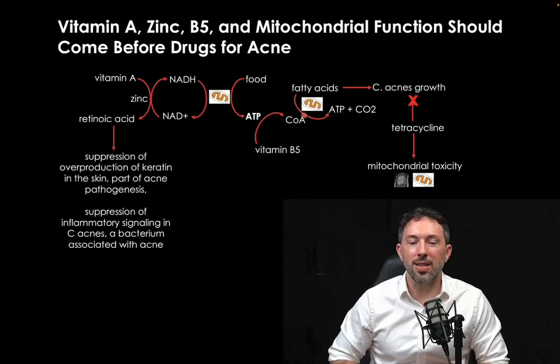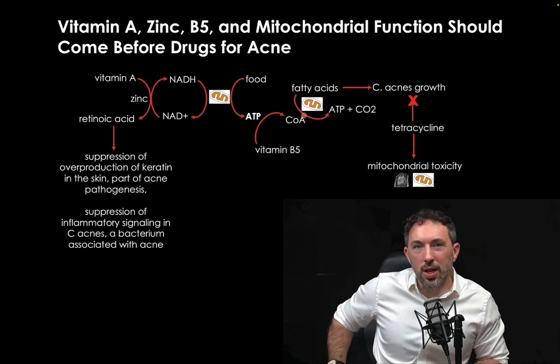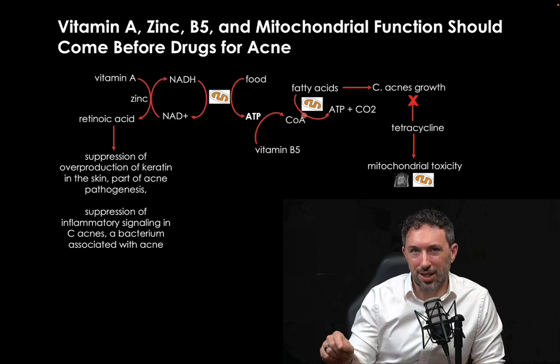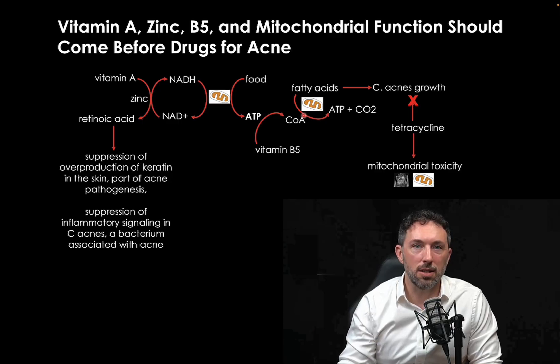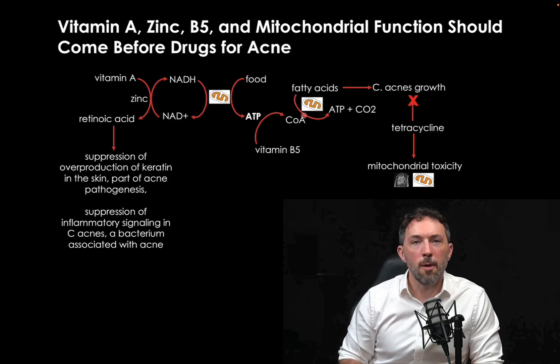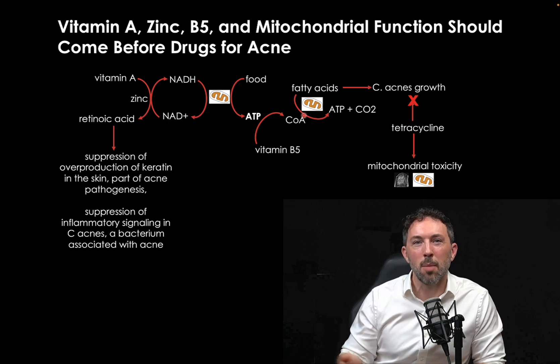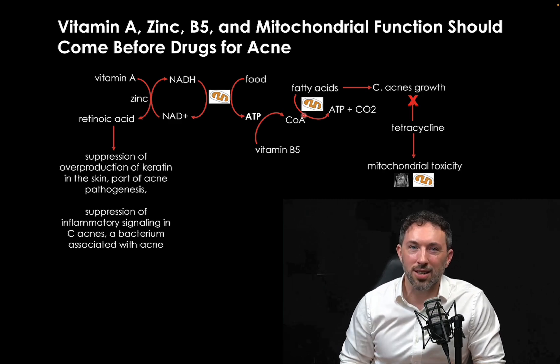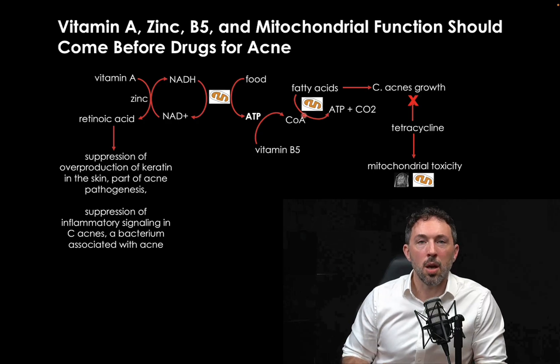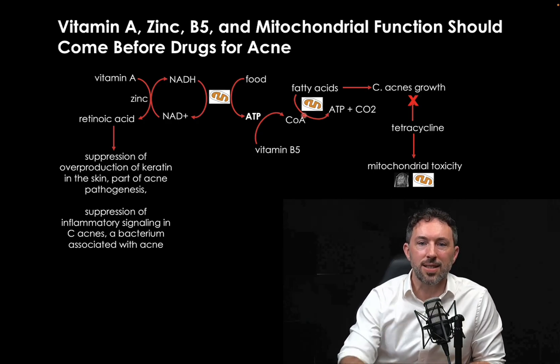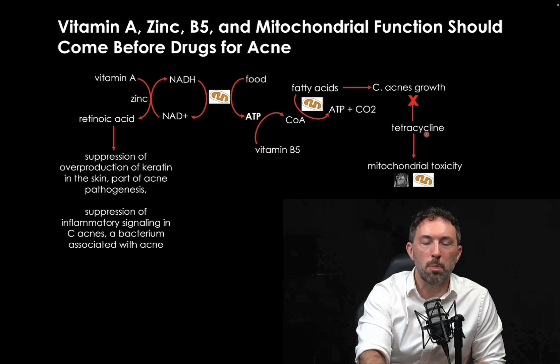Tetracycline is actually a mitochondrial toxin. One of the side effects of high-dose tetracycline is that it causes fatty liver disease — quite ironic, because it poisons the respiratory chain, backing up the oxidation of fatty acids and causing fatty liver in the context of high-dose intravenous tetracycline. When you put it on your skin, you're killing C. acnes, but you're also hurting the mitochondria in your skin and preventing fatty acid oxidation. You might not have a high enough dose for fatty liver disease, but you may inhibit fatty acid oxidation in the skin enough to keep feeding C. acnes and make you dependent on the tetracycline.